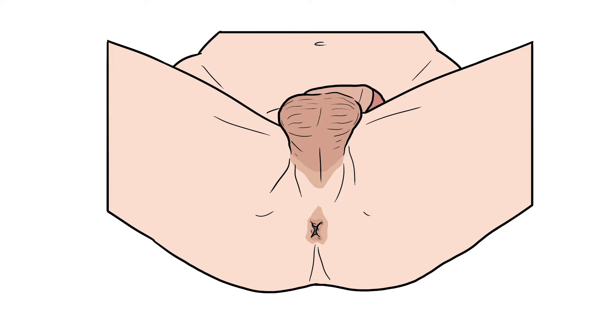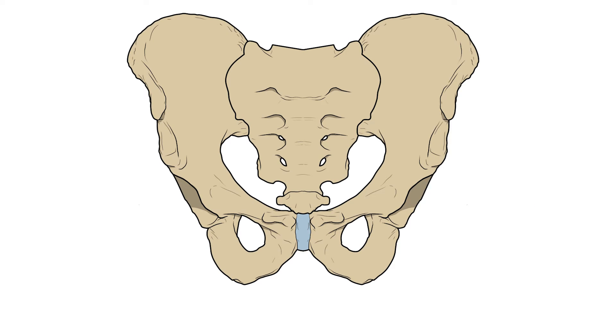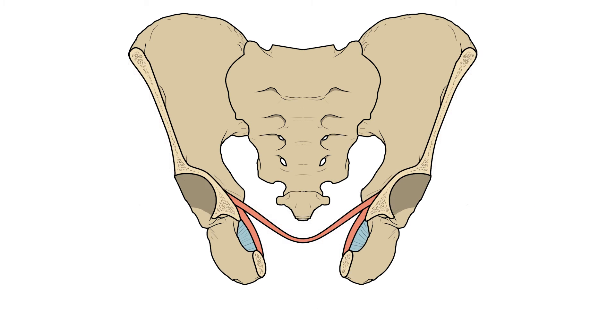Clinically the term perineum is often used to describe the region between the external genitalia and the anus, but anatomically we define the perineum as the region inferior to the pelvic floor.